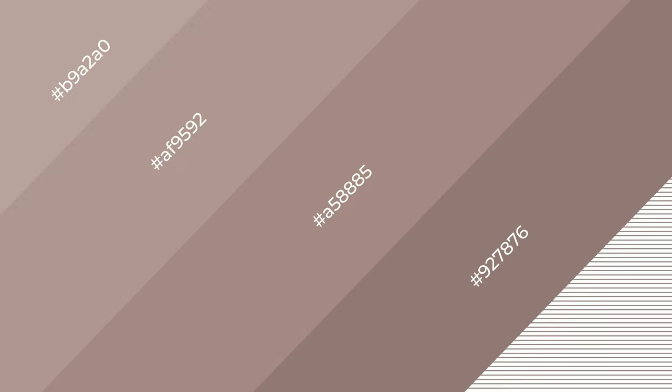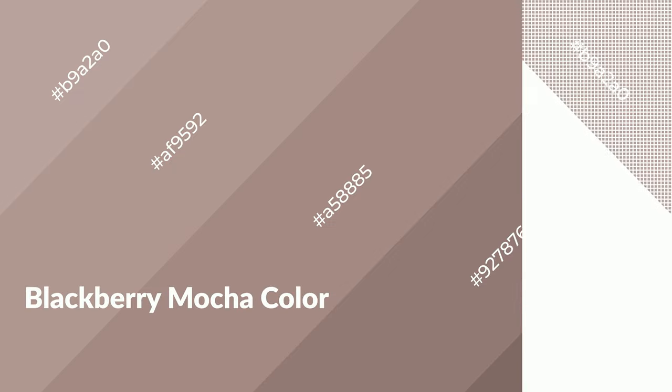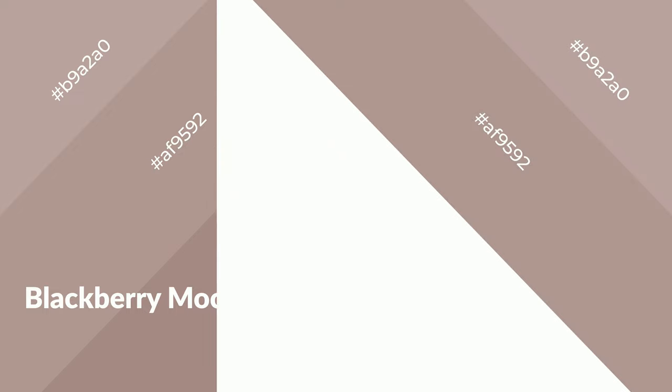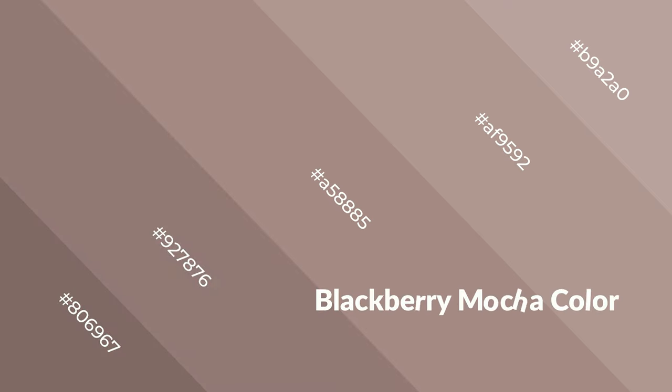Shades are used in patterns, 3D effects, and layers, and they create depth and drama. Blackberry mocha is a warm color and it emits cozier and active emotions. Warm colors are symbols of warmth, fire, heat, and sunshine. They also evoke joy, passion, love, and even anger. You can see them used in restaurants and gyms.